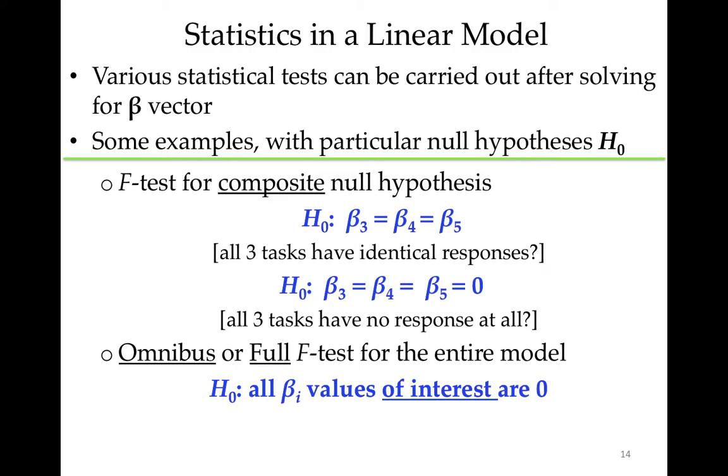In AFNI, we always calculate the full F-test for the entire model, which is to say all the beta values for regressors of interest are tested against zero in a composite test. So that's a useful thing to look at because it tells you right away, did my model fit the data in a reasonable way anywhere?